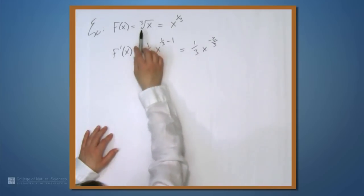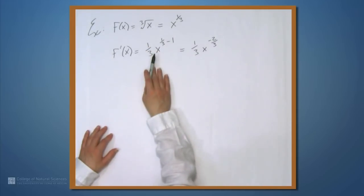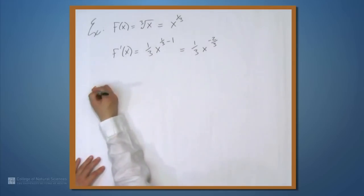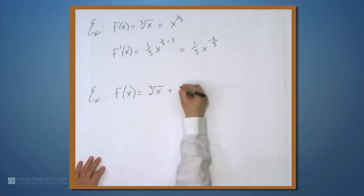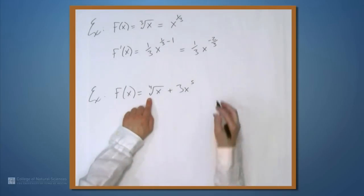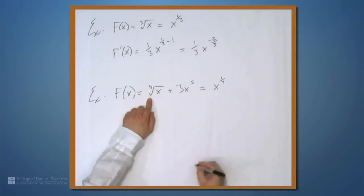Now we can combine root expressions with any other kind of expression that we can differentiate. Let's look at an example of that. Let's say that f(x) is the 4th root of x plus 3x to the 5th. Step 1, rewrite the 4th root as an exponent. So this becomes x to the 1 fourth plus 3x to the 5th.